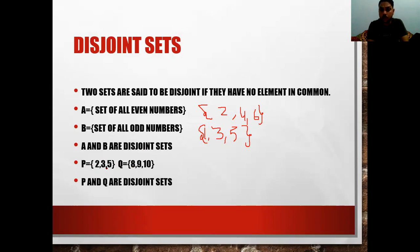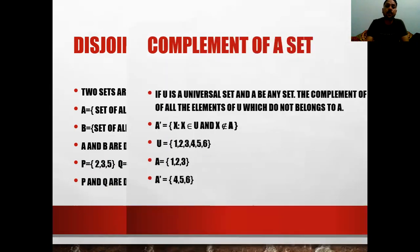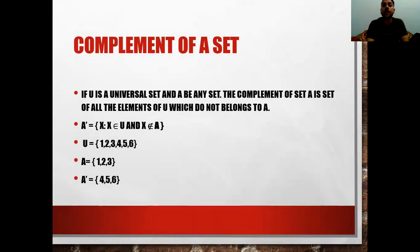Another example of disjoint sets: P = {2, 3, 5} and Q = {8, 9, 10}. These are disjoint sets because no element is common between them.